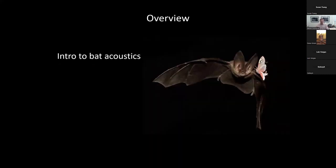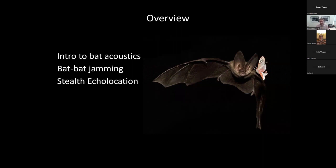We're going to be looking at this mostly through the lens of the sensory perception of bats — their echolocation and the different adaptations that go along with it. I'm going to start by giving an overview of echolocation and acoustics at a fairly high level. Then I'm going to tell you three vignettes about different research questions: first, jamming — acoustic interference between prey and bats; second, stealth echolocation; and finally, the possibility that bats may be flying completely in the dark without using echolocation.